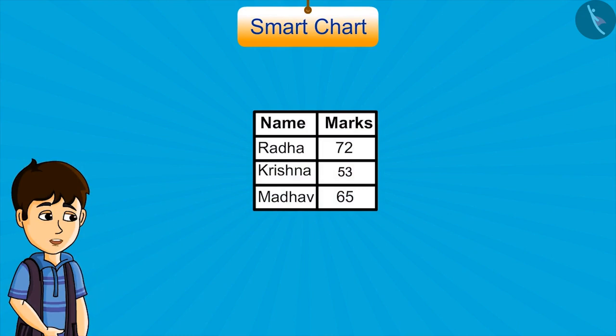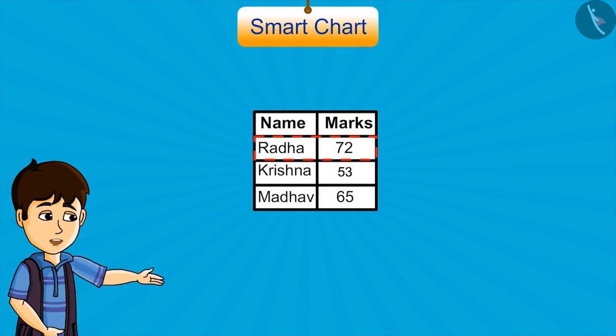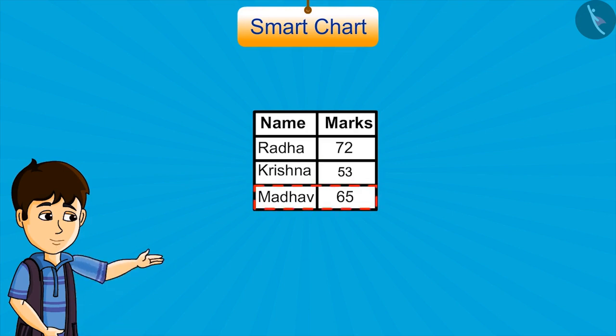Here are the marks scored by 3 students in maths. Radha got 72, Krishna got 53, and Madhav got 65.